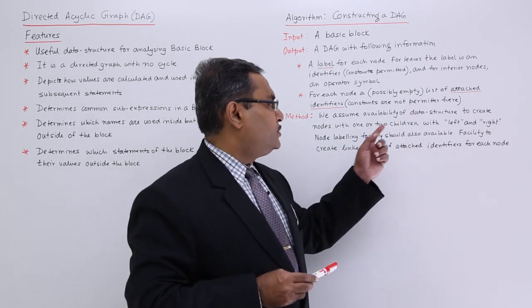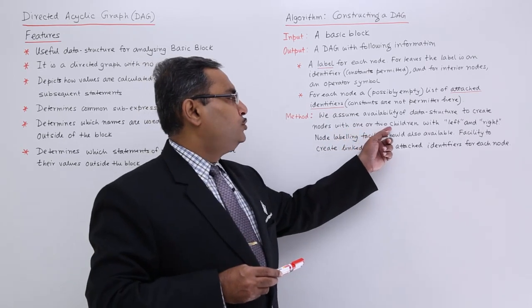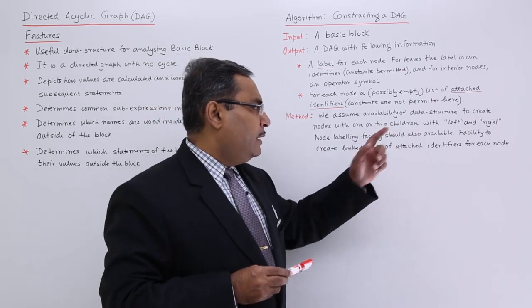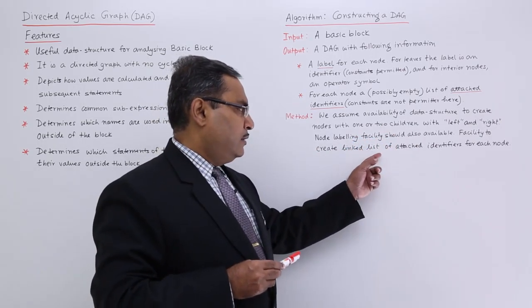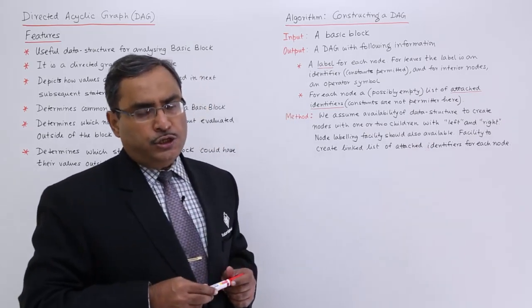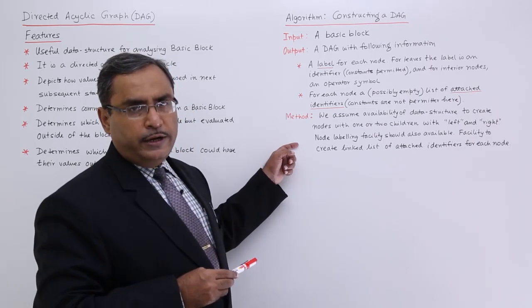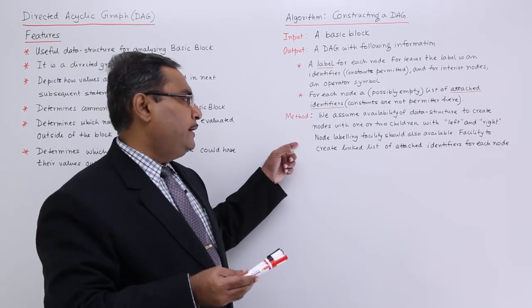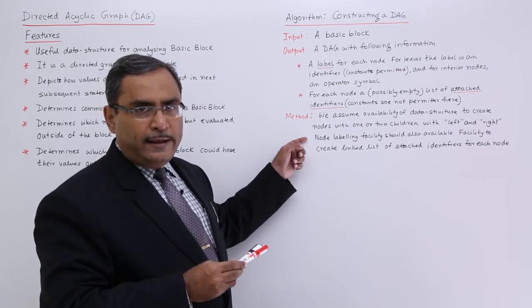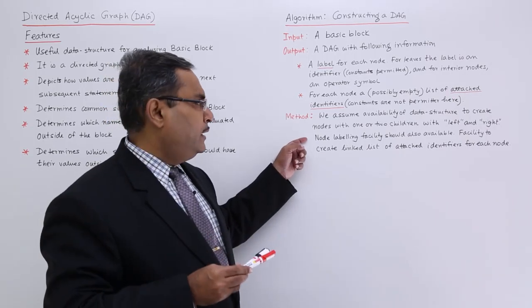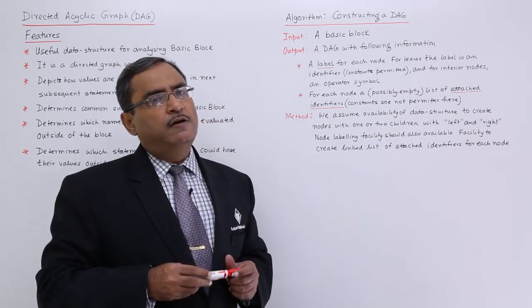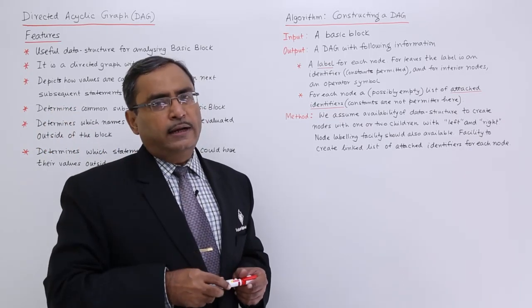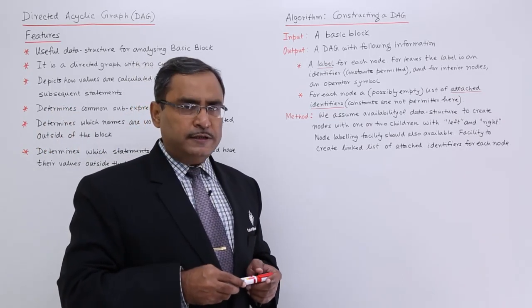For the method, we assume availability of a data structure to create nodes with one or two children — left and right. Node labeling facility should also be available. Facility to create a linked list of attached identifiers for each node should also be available. That means we will be creating nodes where one or two children will be there, one will be the left and another will be the right, and against a certain node we can have some attached identifiers stored in a linked list.